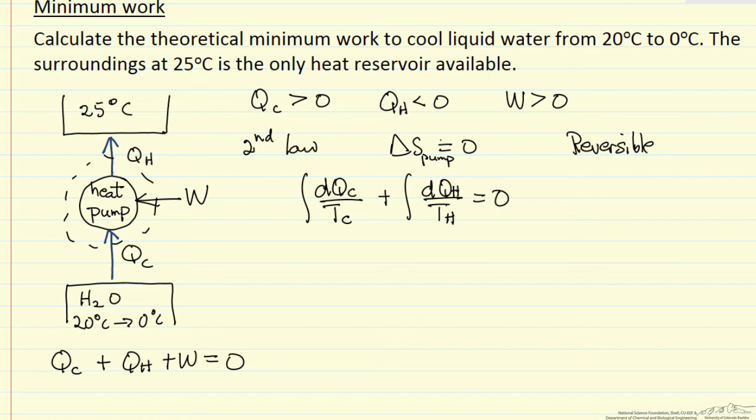We have to be careful with signs here. DQC is Cp DTc over Tc with the integral sign, and so we can say we are lowering the temperature of the water from 20 degrees C, which is 293 Kelvin, down to zero degrees C, 273 Kelvin.